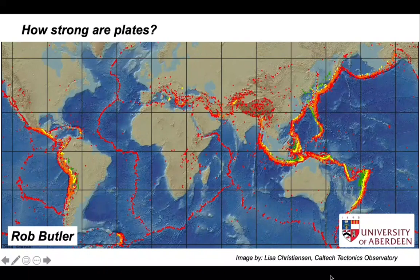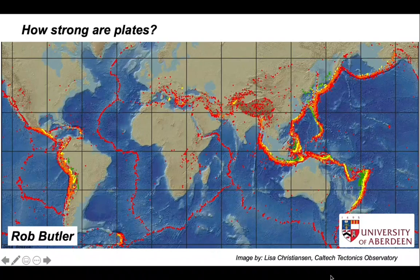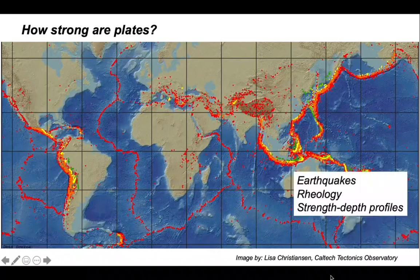Central to the notion of plate tectonics is that the plates themselves move with relatively little internal deformation. All the action happens on the boundaries, so plate interiors are strong. But what do we mean by this? How strong are they, and does this strength vary? In pondering these questions, we'll look at earthquakes and consider the rheology of rocks to construct profiles of strength variations with depth, and we'll use these to address some tectonic questions.